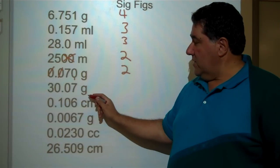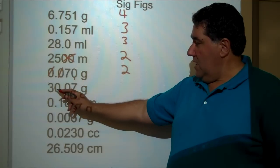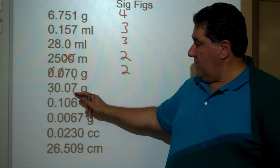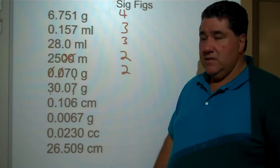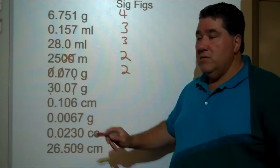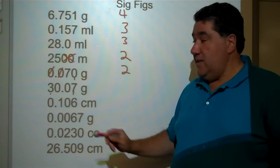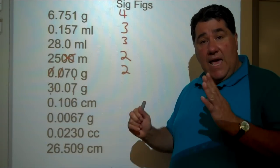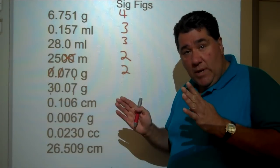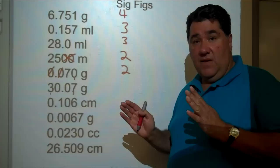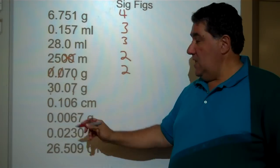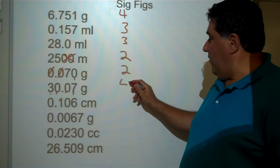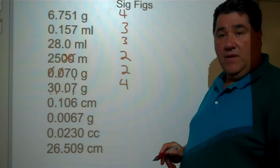30.07 grams. The three is significant and the seven is significant. There are two zeros in between, and by rule three — any zero between two other significant figures is also significant. So these zeros are significant, giving a total of four significant figures.